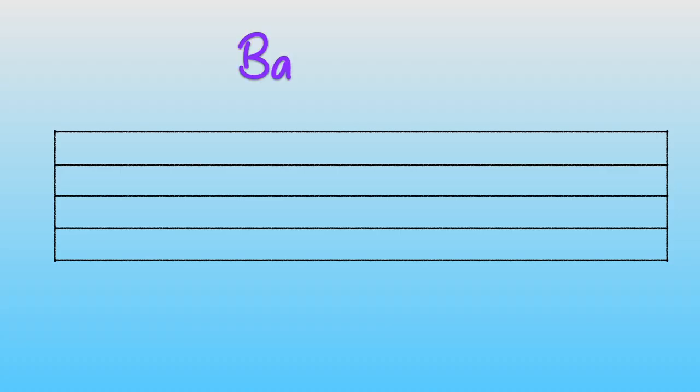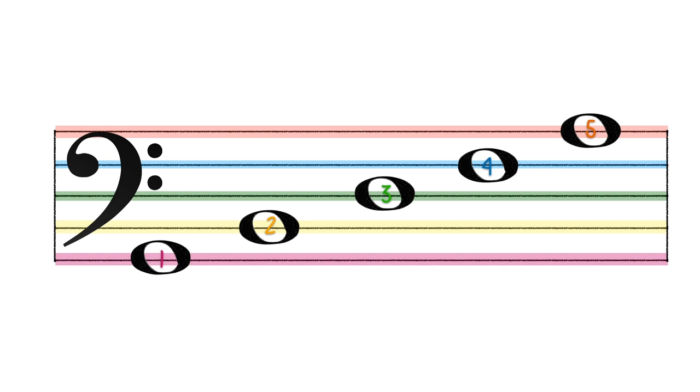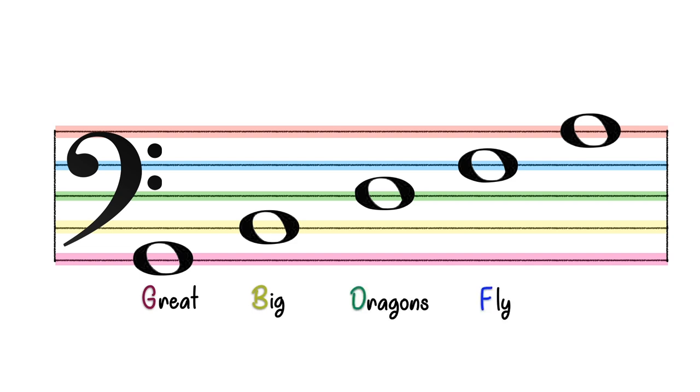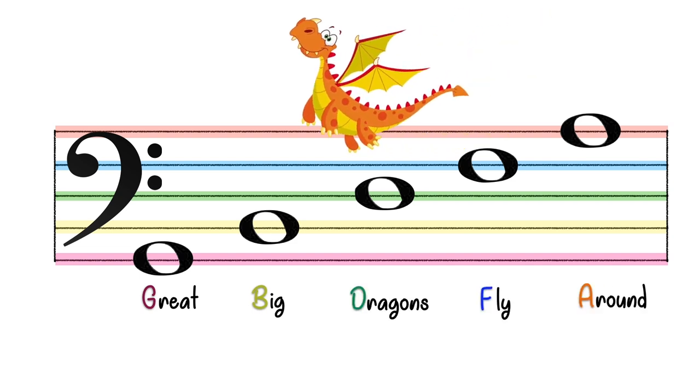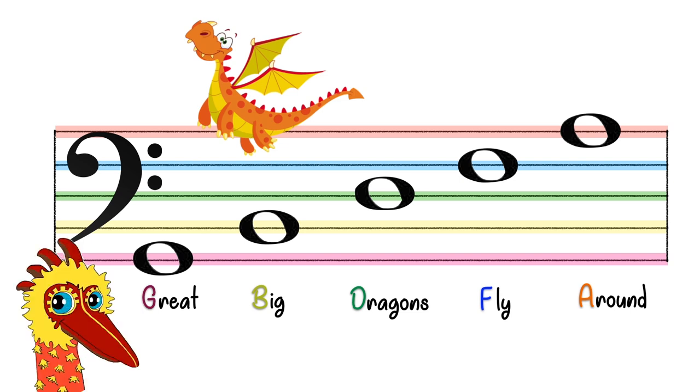Are you ready to learn the acronyms for bass clef? Yes, sirree! Let's put the note heads onto the bass clef lines. Line note 1, 2, 3, 4, and 5. The acronym phrase for bass clef line notes is Great Big Dragons Fly Around, representing G, B, D, F, and A. I like dragons!